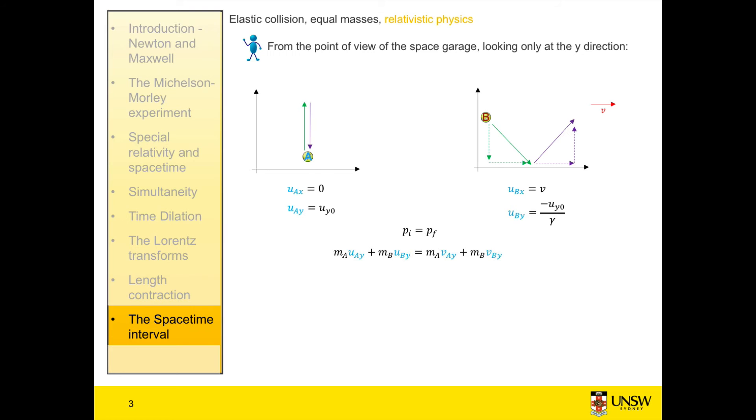So when we substitute in our values for the velocities and we simplify the equation, we find that our masses are different. Our mass B, as measured by the space mechanic, is equal to gamma times the mass A.